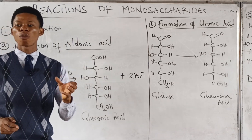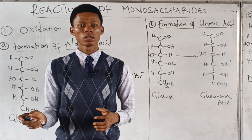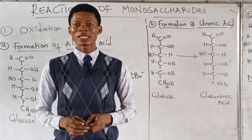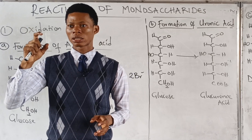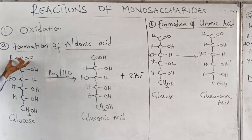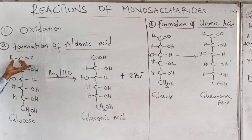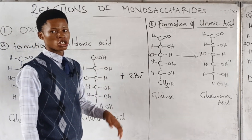So gluconic acid is an aldonic acid. The first type of oxidation is formation of aldonic acid, and the weak oxidizing agent is used here. Only the aldehyde functional group is oxidized.